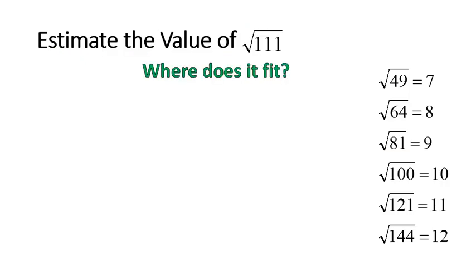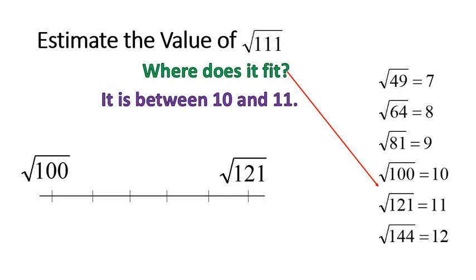If we're looking at a number like the square root of 111, we ask, where does it fit on our list of perfect squares? In this case, it fits between 10 and 11. See that? The square root of 111 fits right between 100 and 121. So we set up a number line, and we again ask ourselves, where does it fit on this number line? In this case, it fits right about the middle.